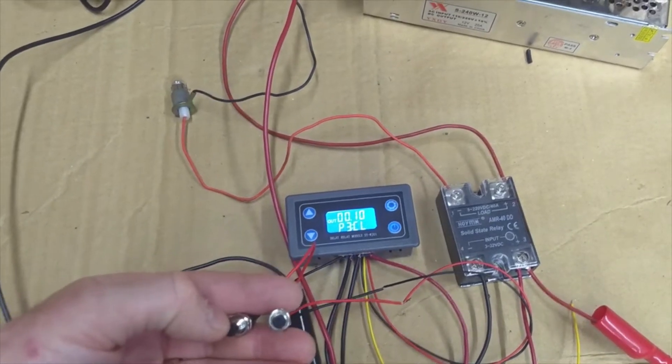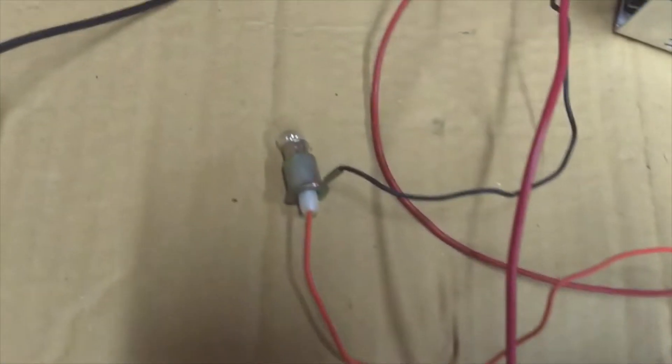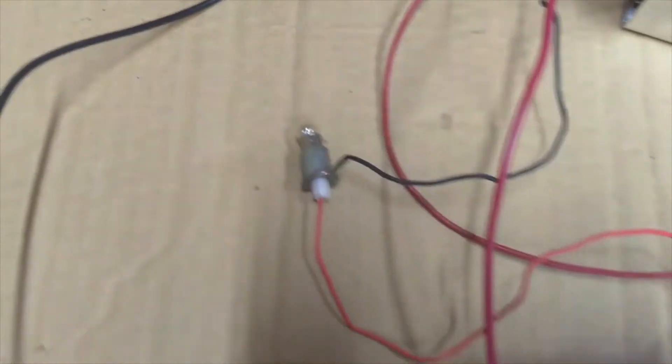So here's the prototype for the bump box. The light bulb up here is taking the place of the trans brake.